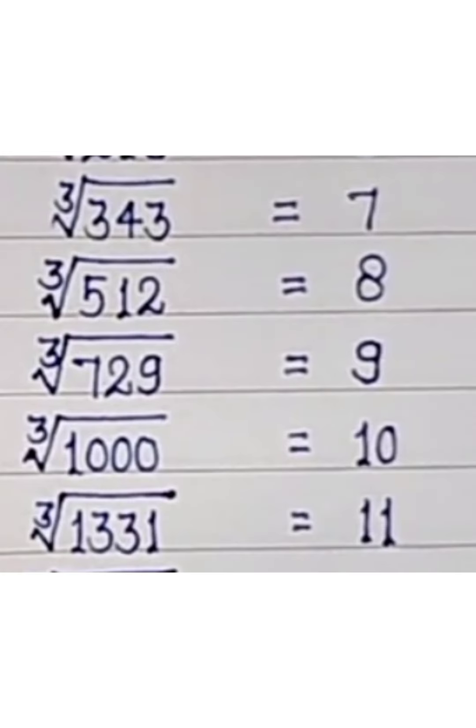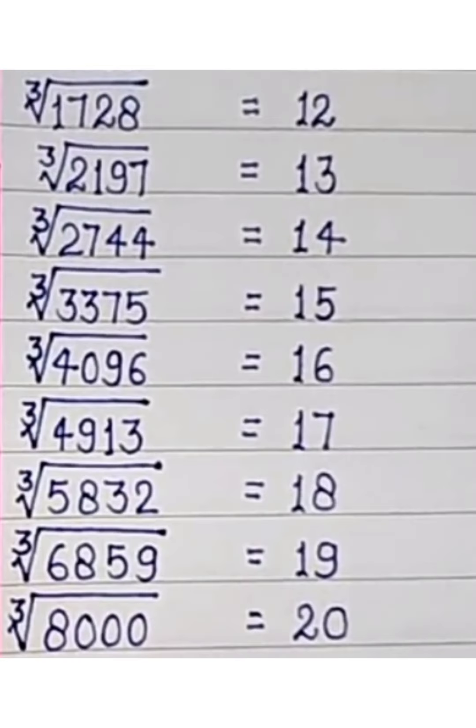11 cube root is 1331, 12 cube root is 1728, 13 cube root is 2197.